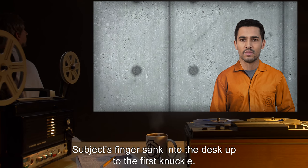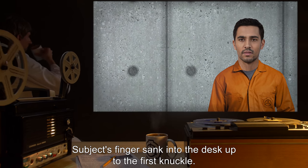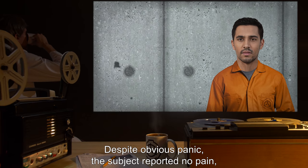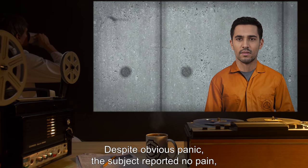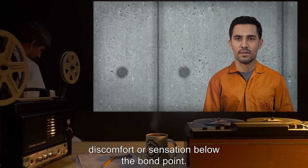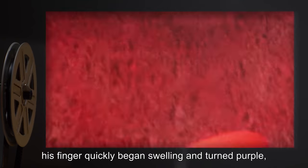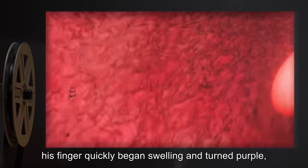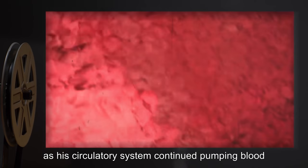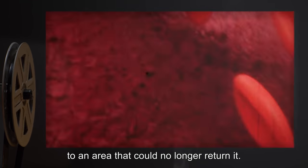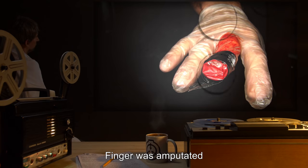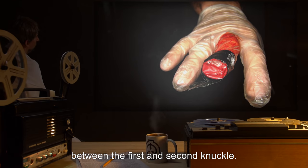Results: subject's finger sank into the desk up to the first knuckle. Despite obvious panic, the subject reported no pain, discomfort, or sensation below the bond point. However, his finger quickly began swelling and turned purple as his circulatory system continued pumping blood to an area that could no longer return it. Finger was amputated between the first and second knuckle.